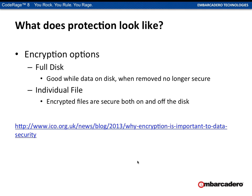There are basically two types of encryption. There's full disk encryption — you can get disks encrypted completely, and this is fine while the data is on the disk. However, when the data is removed from the disk, it's no longer secure. If you can copy a file onto a USB flash drive, that's a security hole. Individual file encryption is a much better approach. If the file is encrypted, it doesn't matter where it exists — on an encrypted disk, a non-encrypted disk, a USB drive, or a phone. Wherever that file is, the data is physically encrypted.